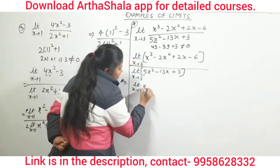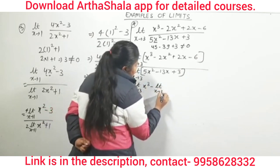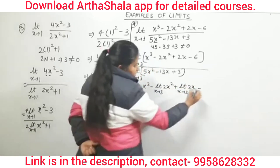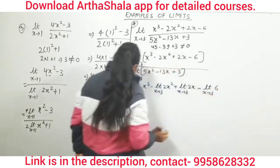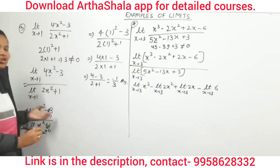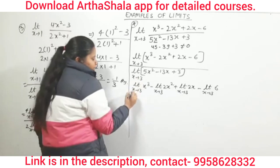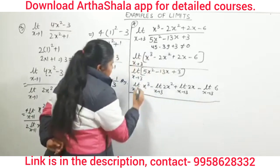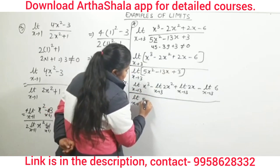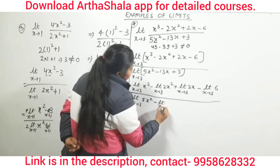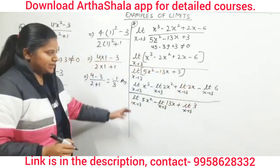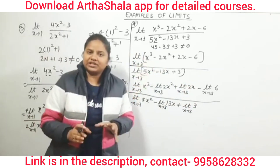We check: the denominator is 5x² − 13x + 3. Putting x = 3: 5(9) − 13(3) + 3 = 45 − 39 + 3 ≠ 0. So the denominator is not zero and we can apply the quotient rule. We apply the quotient rule: limit x→3 of (x³ − 2x² + 2x − 6) divided by limit x→3 of (5x² − 13x + 3).